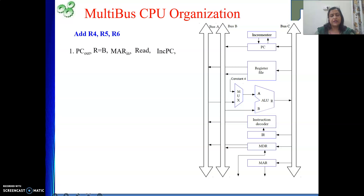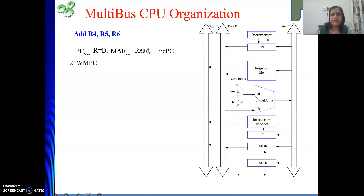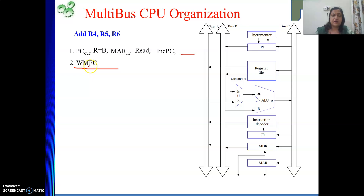We have incremented the PC and told the memory to give us the instruction. Next we have to wait — that signal is WMFC. WMFC will be in the next step only, because two signals cannot be given on the same path at the same time. So the read signal is in one cycle, and WMFC in the next one.